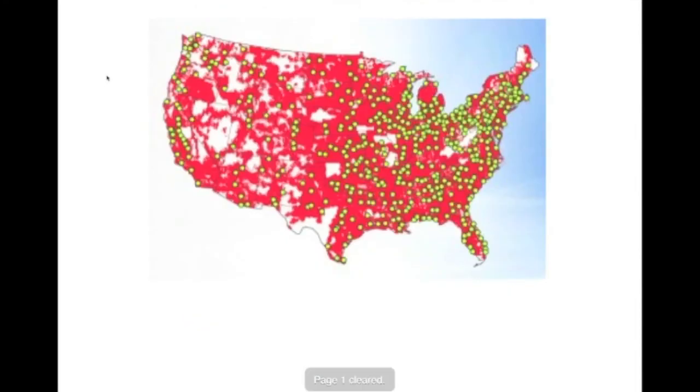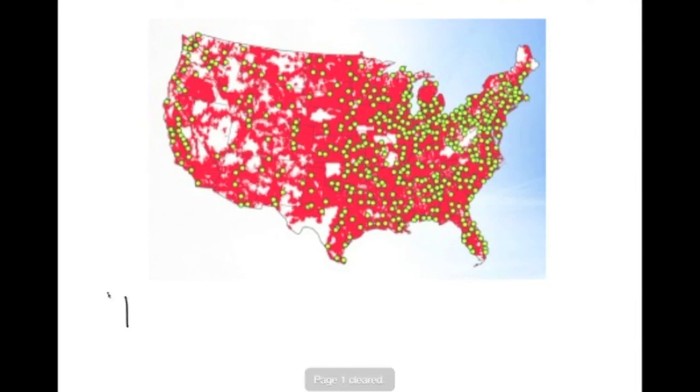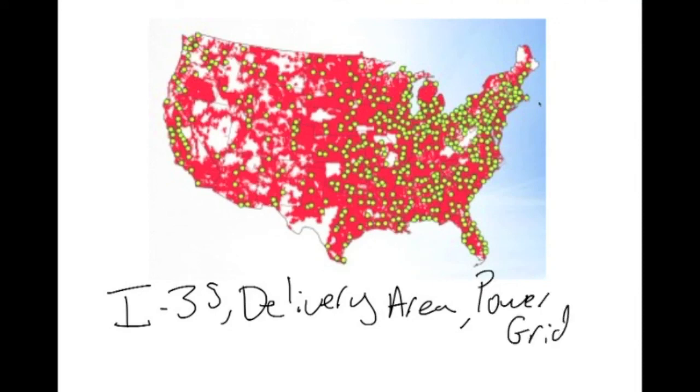The next type of region is what's called a functional region. Functional regions work together, and this is a Verizon cell phone map. This network works together. All these little nodes, these little cell towers, all these little green dots, they work together, and they create a functional network, the Verizon cell phone network. So functional networks work together. Some examples might be I-35, a delivery area, anything that works together. So maybe a power network, a power grid, anything that works together is a functional region.